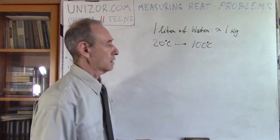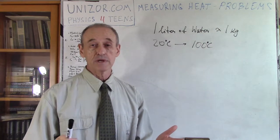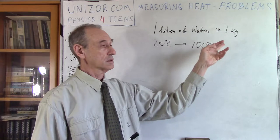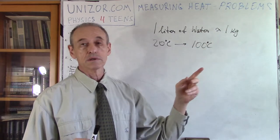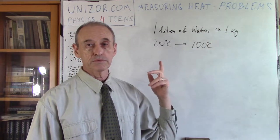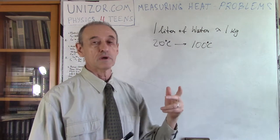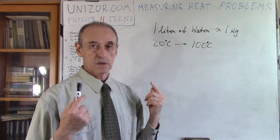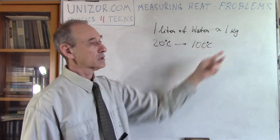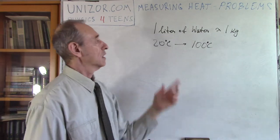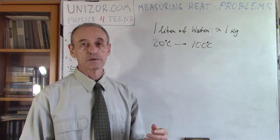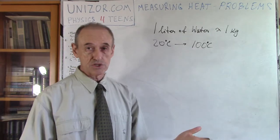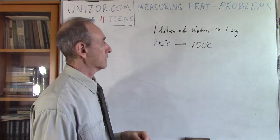In calories, it's very easy, because we know that to heat one gram of water by one degree is one calorie, so one kilogram is one kilocalorie. You have 80 degrees to heat from 20 to 100, so it's 80 kilocalories. But I would like to use the SI system, which is basically always used in physics, and the amount of energy — and heat is an energy — so its amount of heat will be measured in joules.